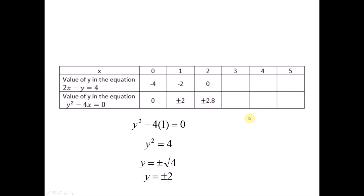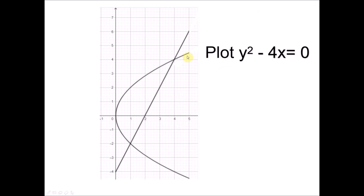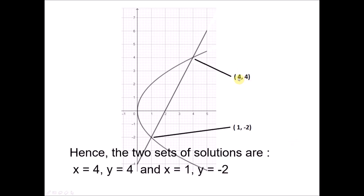Plot the graphs. The first equation gives a straight line since it is linear. The second equation gives a curve since y is squared. To solve the simultaneous equations graphically, we look for the coordinates of the intersection points of the two graphs. The intersection points are (4, 4) and (1, negative 2). These are the two solution sets: when x is 4, y is 4; and when x is 1, y is negative 2. The intersection points give us the answer.